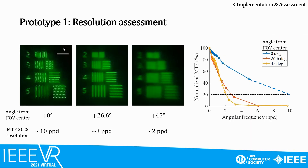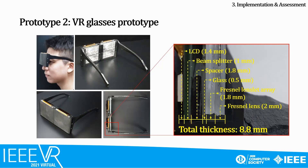The resolution was measured by capturing a resolution target. At the center, the MTF result shows about 10 pixels per degree of resolution, which was enough to deliver the whole resolution of the LCD pixels. However, we observed that the resolution decreases in the peripheral region. We believe that this can be improved in the future by optimizing the Fresnel lens. Secondly, we built the VR glasses prototype. It includes the pancake lens system, and we could achieve a total thickness of 8.8 mm. The thickness difference between the theory and prototype comes from the thickness of the LCD, Fresnel lens, and lens lid array.